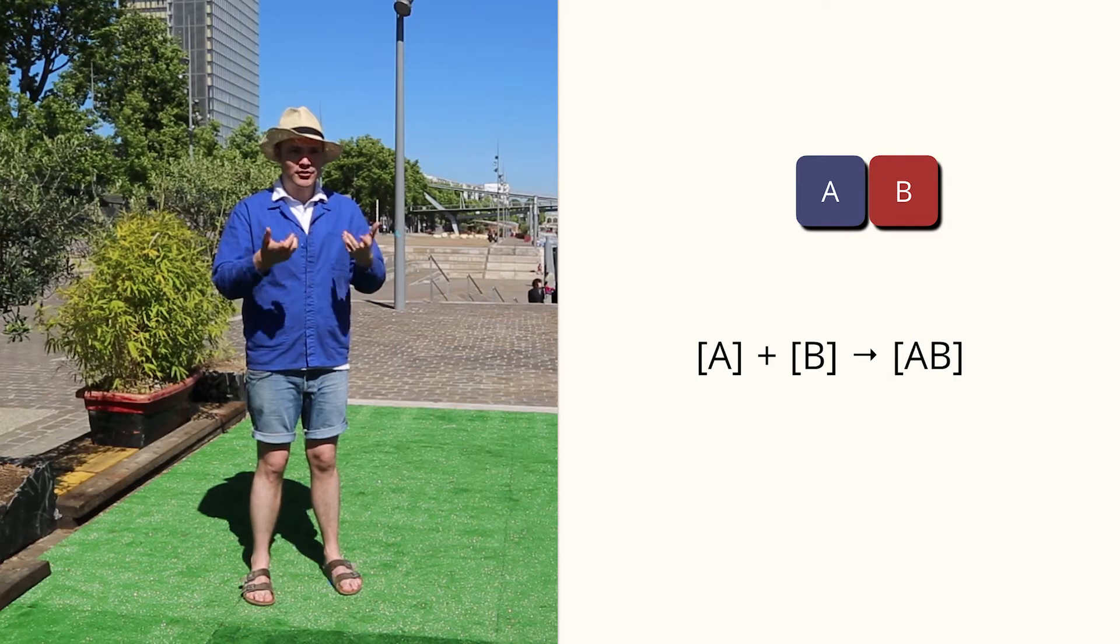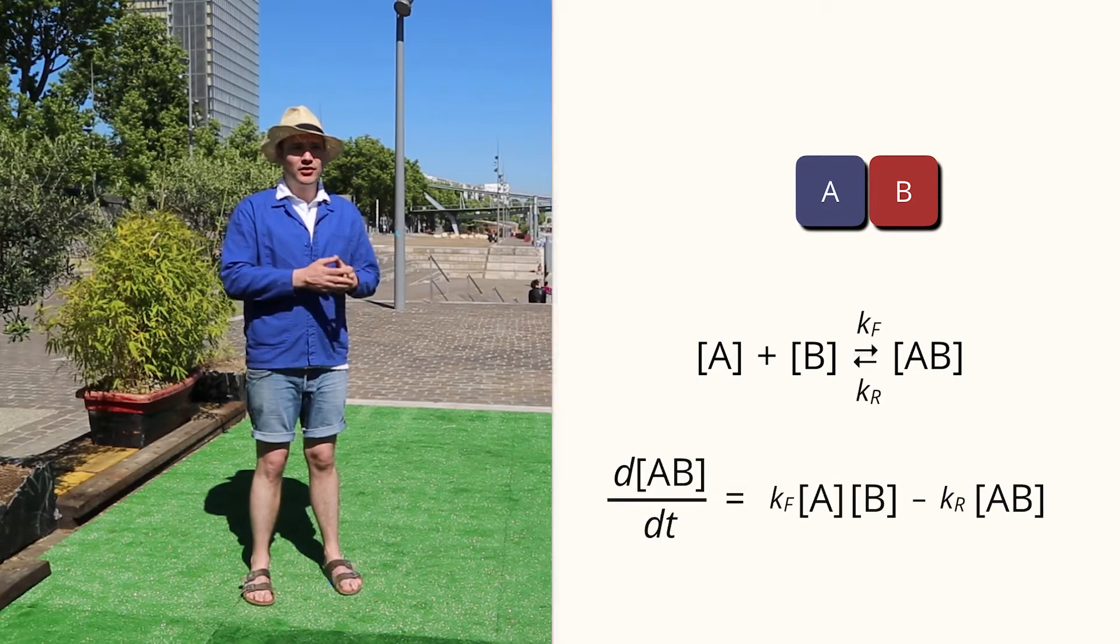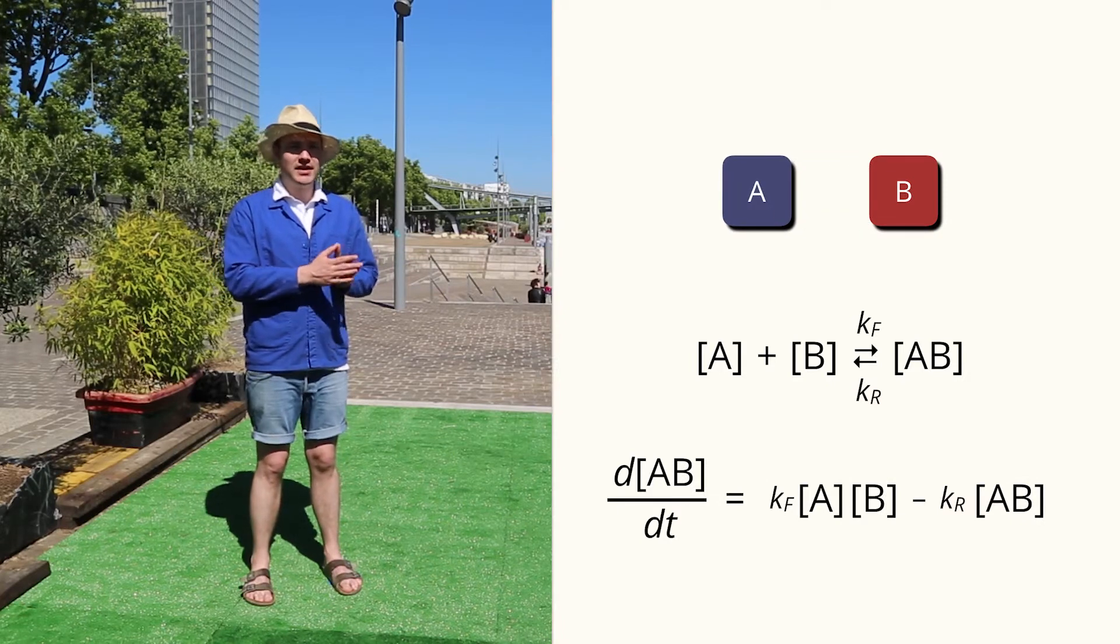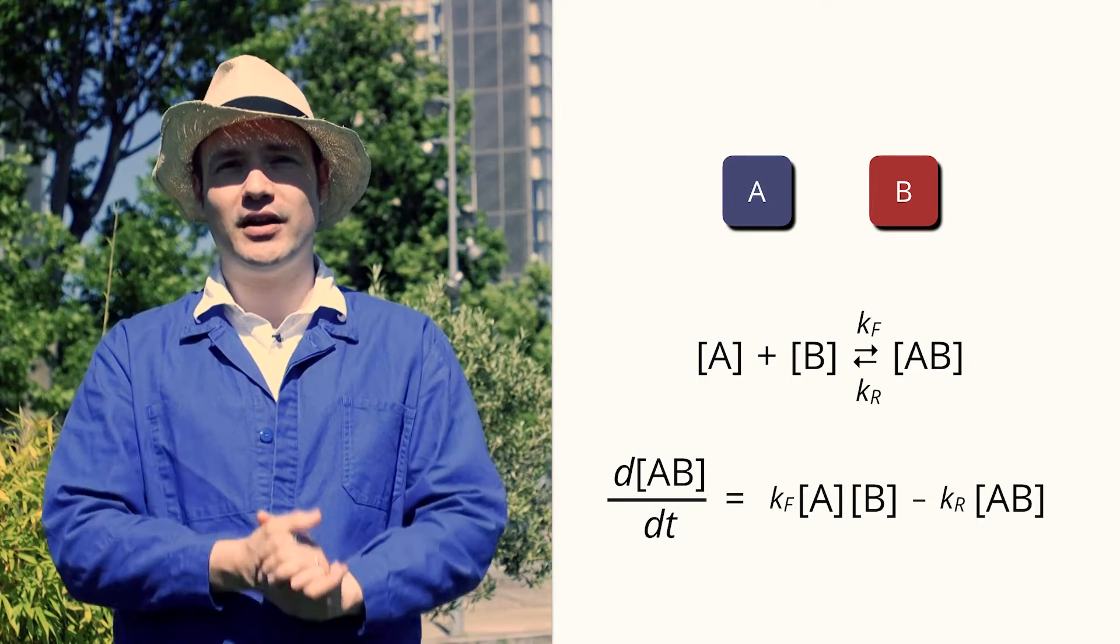Using the rules of mass action kinetics, we can turn this picture into an equation. The rate of the formation of the complex is Kf times A times B minus Kr times the concentration of the complex.